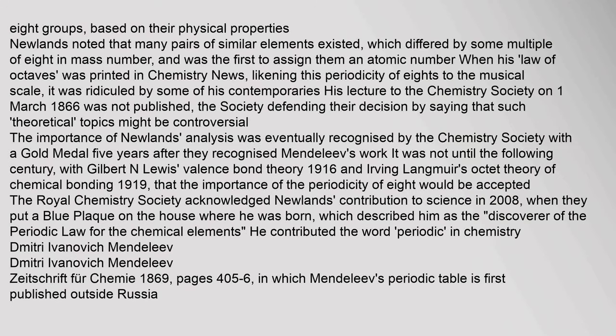Newlands noted that many pairs of similar elements existed, which differed by some multiple of eight in mass number, and was the first to assign them an atomic number. When his Law of Octaves was printed in Chemistry News, likening this periodicity of eights to the musical scale, it was ridiculed by some of his contemporaries. His lecture to the Chemistry Society on 1 March 1866 was not published, as the Society defended their decision by saying such topics might be controversial.